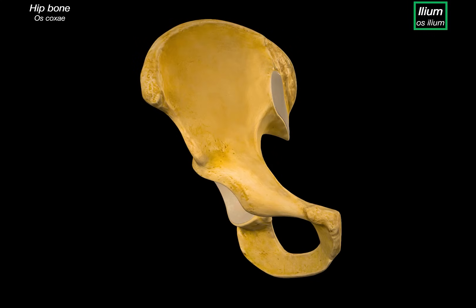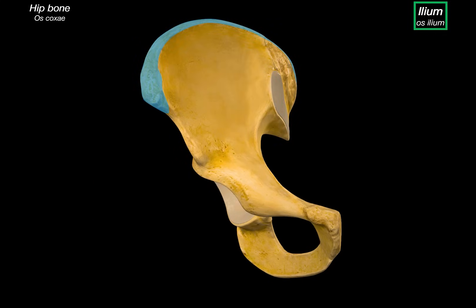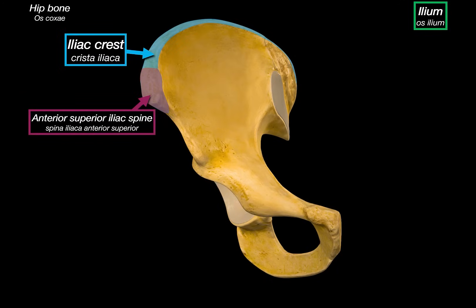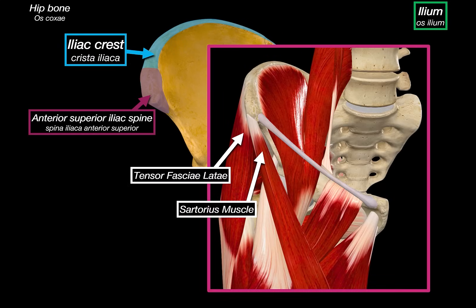Starting with the ilium: it is generally divided into the ala — the wing of the ilium — and the body, the smaller, coital part. Right at the top, we have this broad curved edge called the iliac crest, which is easily palpable on the sides of your hips. If we trace the crest forward, we get to the anterior superior iliac spine, which serves as an attachment site for the tensor fasciae latae, sartorius muscle, and the inguinal ligament. This is also the landmark used when measuring leg length clinically.